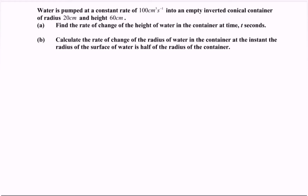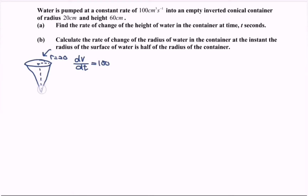First, illustrate the container. Here we have the situation. Now state the formula for the volume of the cone: V = πr²h / 3.